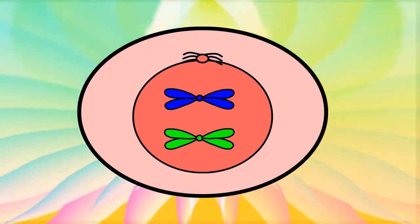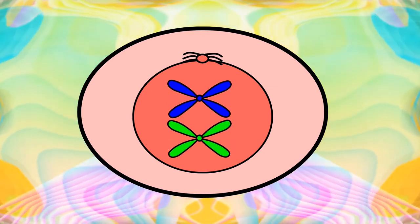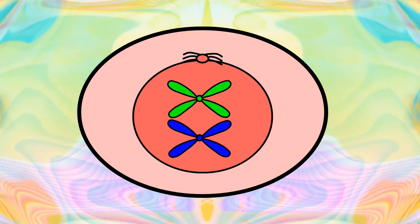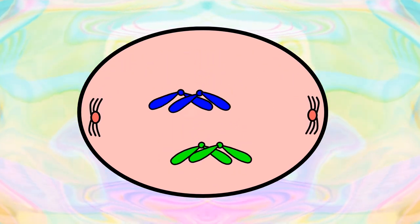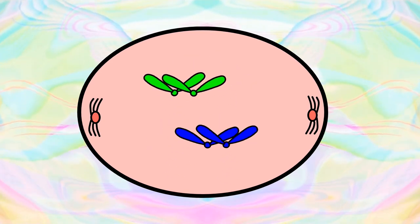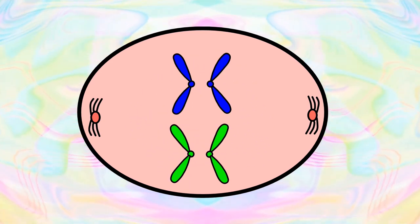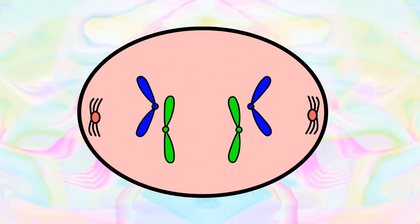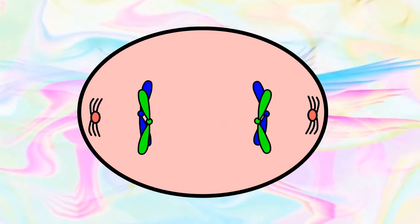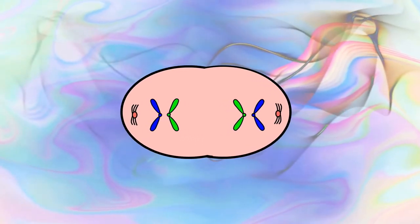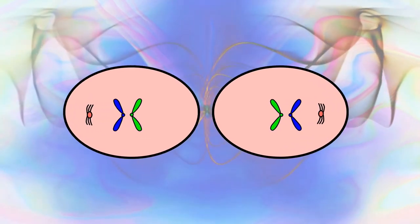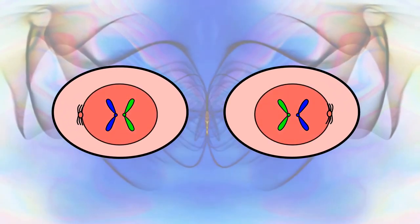DNA chromosomes replicate. These new pairs then separate, as they cluster towards opposing ends. After which a mystery message sends, it's time to split.